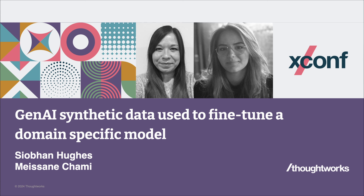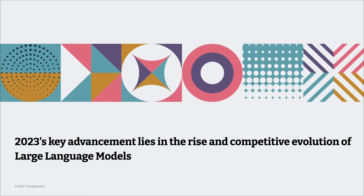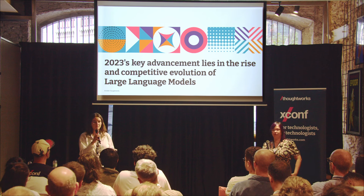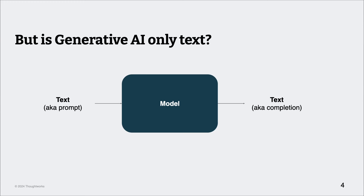As most of you would know, there's been a lot of major development with AI over the past few years. The key advancements lie around general purpose models — big models that can solve multiple tasks. There's been quite a big focus on language and text data, but today we're going to be talking about other modalities, and more specifically images.